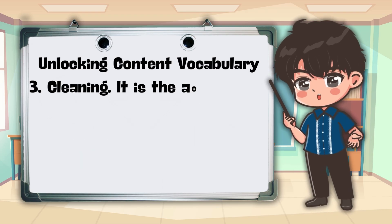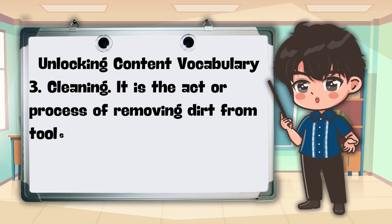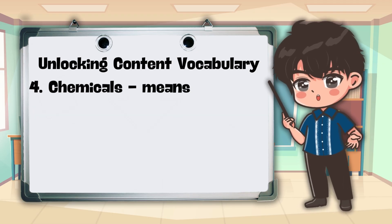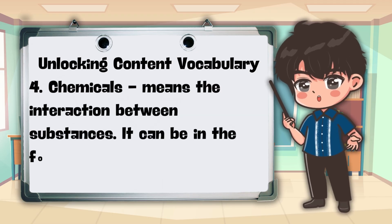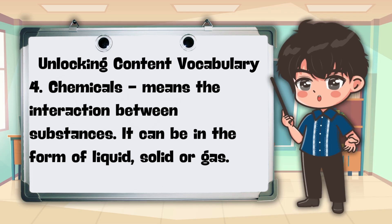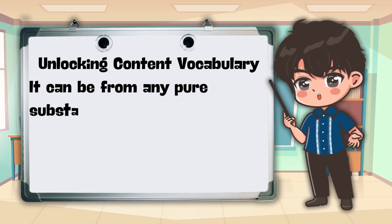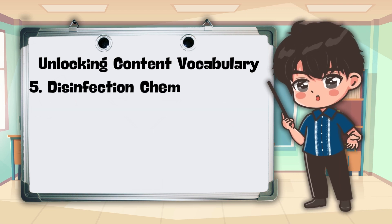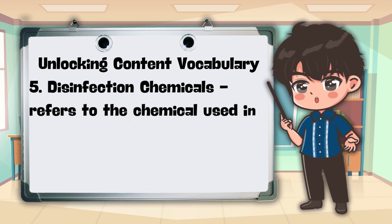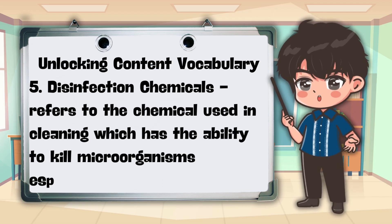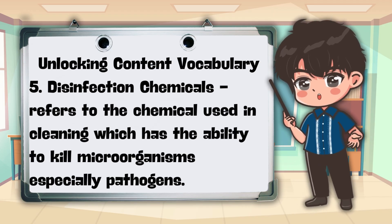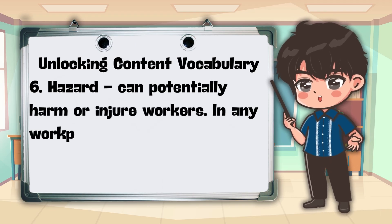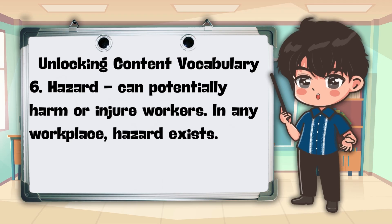3. Cleaning — It is the act or process of removing dirt from tools, containers, and farm facilities. 4. Chemicals — It means the interaction between substances. It can be in the form of liquid, solid, or gas, from any pure substance or a mixture of different substances. 5. Disinfection Chemicals — It refers to the chemical used in cleaning which has the ability to kill microorganisms, especially pathogens. 6. Hazard — It can potentially harm or injure workers. In any workplace, hazard exists.